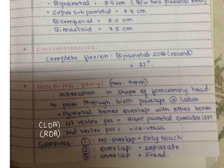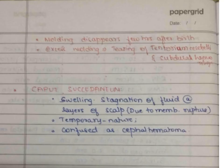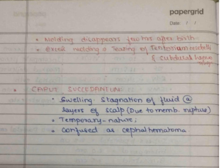The grading of molding: Grade 1 — bones are just touching but no overlap. Grade 2 — overlapping occurs but the bones remain separate and reducible. Grade 3 — overlapping with the bones remaining fixed. Molding is important for passage of the fetus through the birth canal. It disappears a few hours after birth. Up to four millimeters of molding is normal; excess molding can lead to tearing of the tentorium cerebelli and subdural hemorrhage.